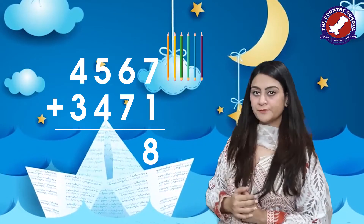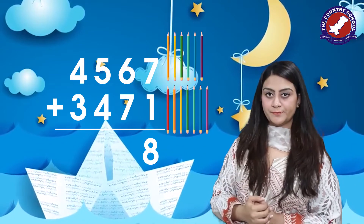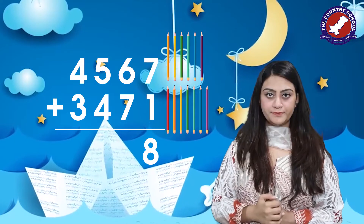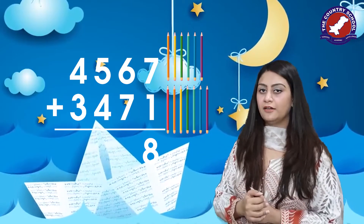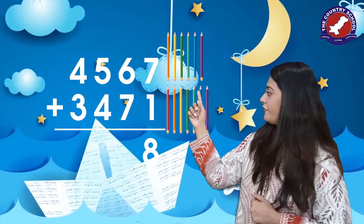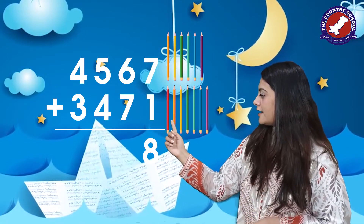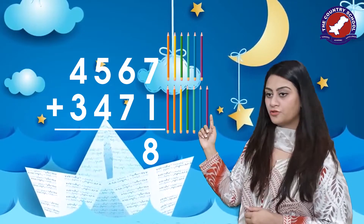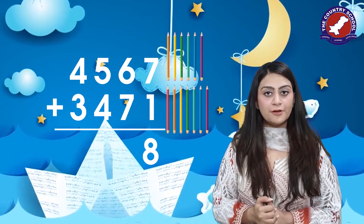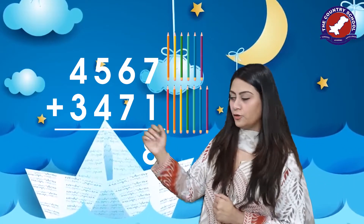Take out six pencils, then three pencils, then seven pencils, and count them all together: one, two, three, four, five, six, seven, eight, nine, ten, eleven, twelve, thirteen. You have got thirteen pencils. But we cannot write thirteen over here.